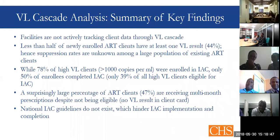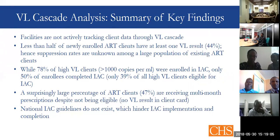On the cascade analysis, facilities are actively tracking client data through viral load cascades. While 78% of high-viral-load clients were enrolled, under 50% completed IAC. Surprisingly, a large percentage of IAC clients — around 70% — are receiving drug prescriptions despite not being eligible and having no viral load result on the client card. National IAC guidelines do not exist, which hinders IAC implementation.